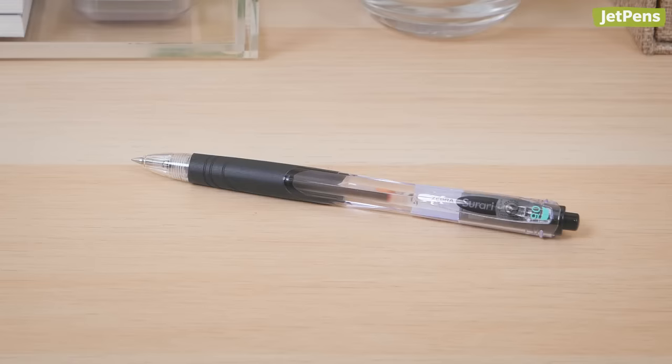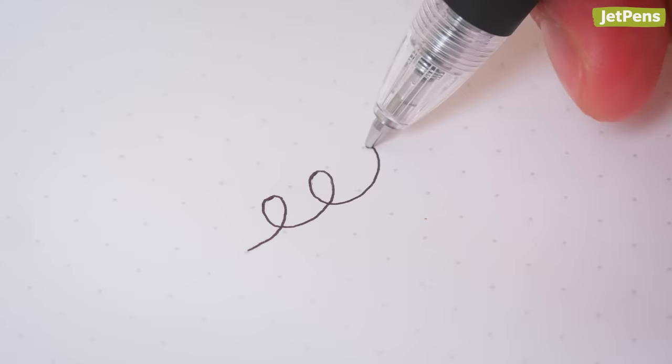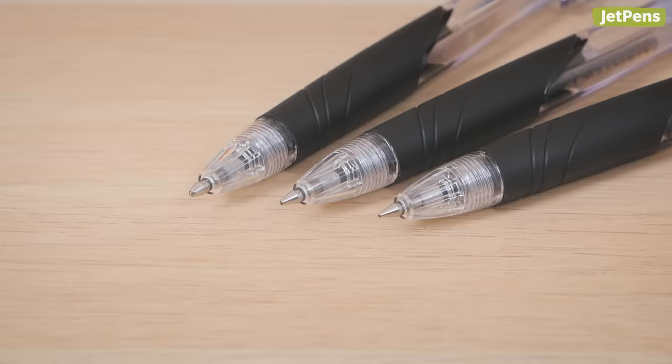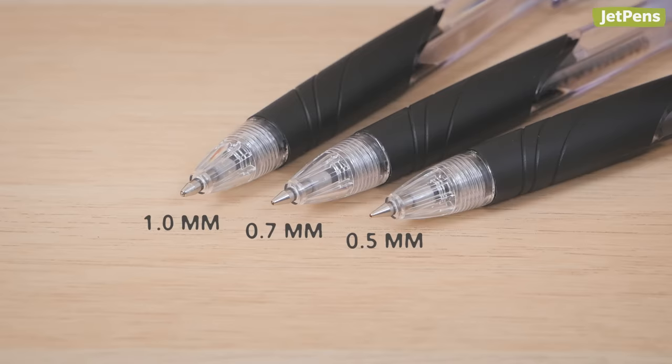The Zebra Surari uses even less viscous ink than the Jetstream. This does mean that the ink takes a bit longer to dry, but the pen comes in 0.5mm tip size for lefties or those who prefer faster drying notes.